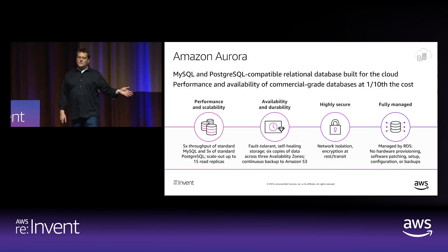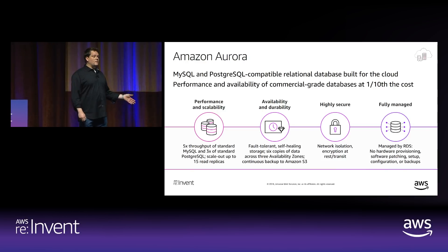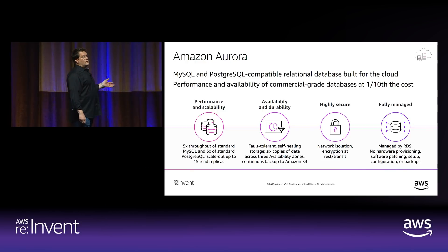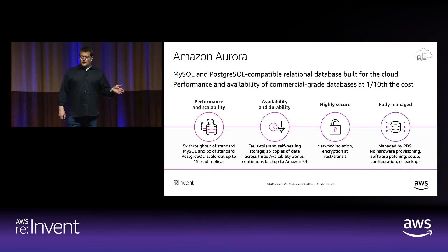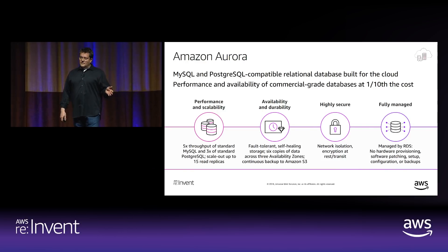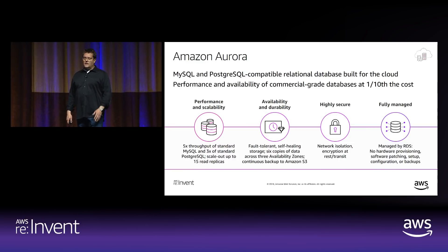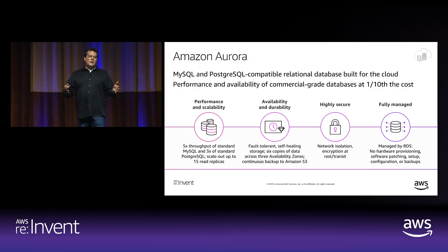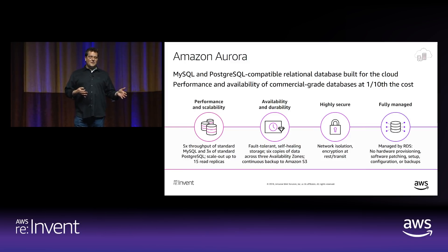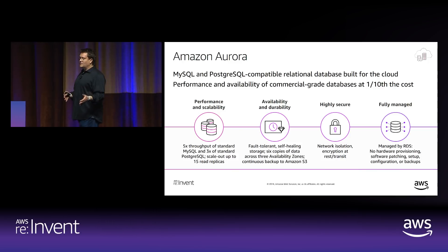With Aurora, you'll often see five times the performance of standard MySQL and three times the performance of Postgres, with the security, availability, and reliability of commercial grade at about a tenth of the cost. This is why Aurora is consistently one of the fastest-growing services in AWS.